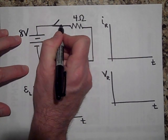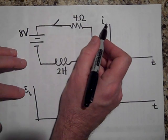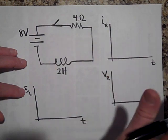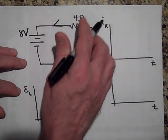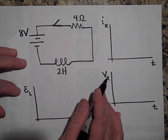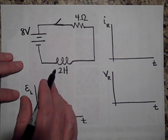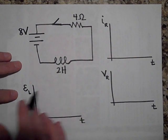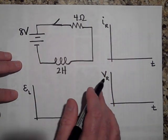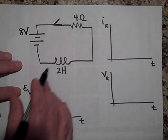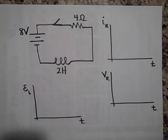When I close this switch, can you show me what the graph is going to look like, out to a time pretty far out, for the current through the resistor, the voltage across the resistor, and the EMF of the inductor? Go ahead and pause and see if you can sketch these three graphs.